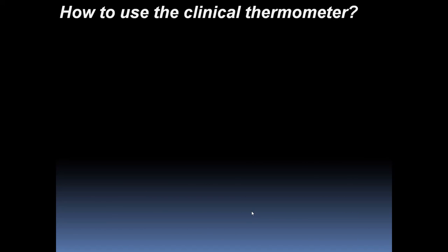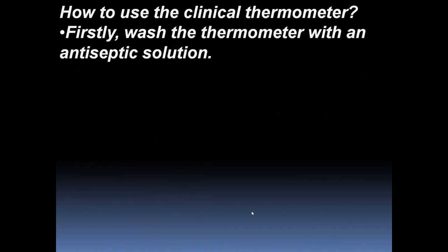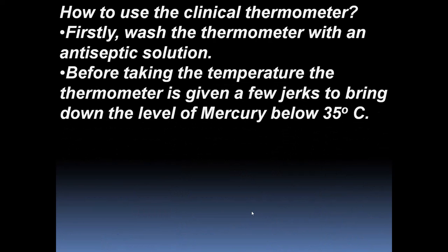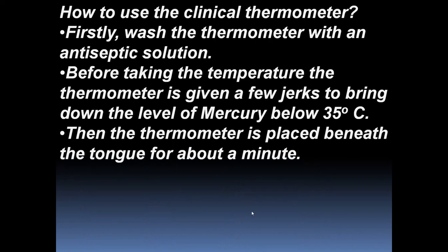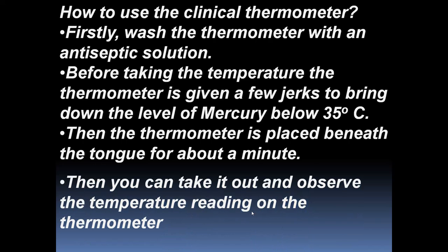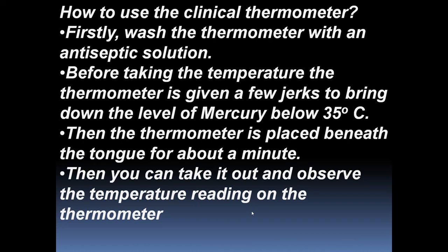Now, let us learn how to use the clinical thermometer. Firstly, we need to wash the thermometer with an antiseptic solution. Before taking the temperature, the thermometer should be given a few jerks to bring down the level of mercury below 35 degrees Celsius. Then, the thermometer should be placed beneath the tongue for about a minute. After that, you can take it out and observe the temperature reading.